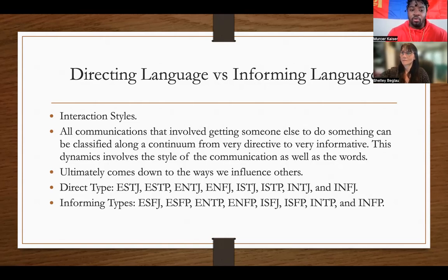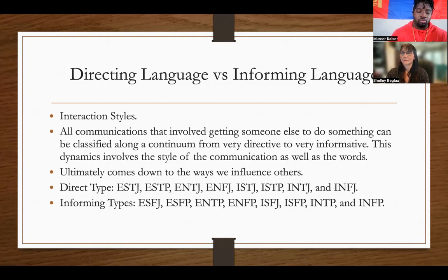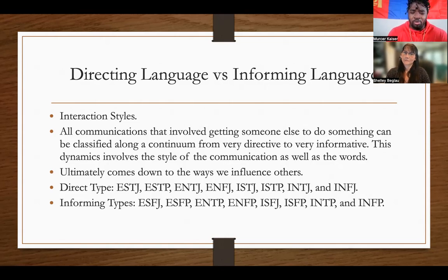Then you have the very wordy informative types — that's going to be your starters, or your get-things-going: ESFJ, ESFP, ENTP, and ENFP. And then you have the responding informative types — they're going to be hiding a lot more — that's the ISFJ, ISFP, INTP, and INFP.